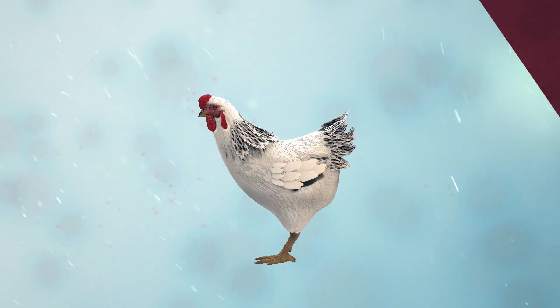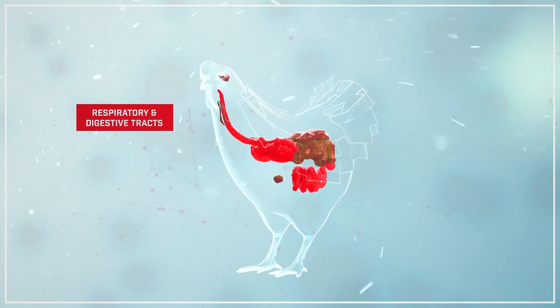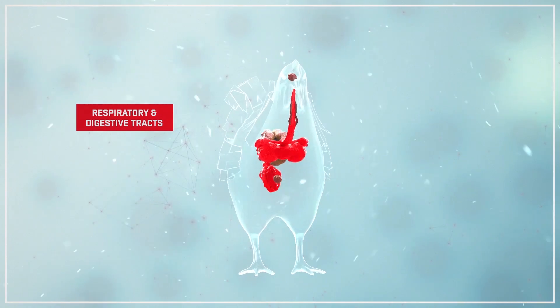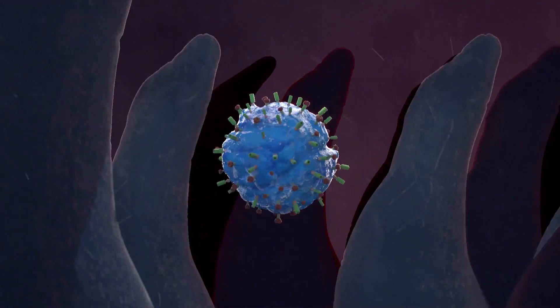The VGGA Avinew vaccine virus replicates in both the respiratory and intestinal tract of chickens and is able to induce both local and systemic immunity.